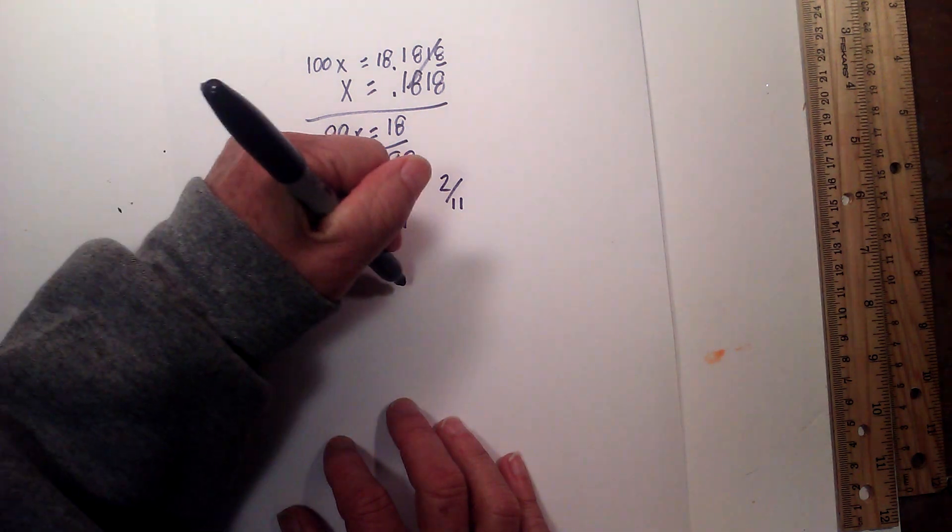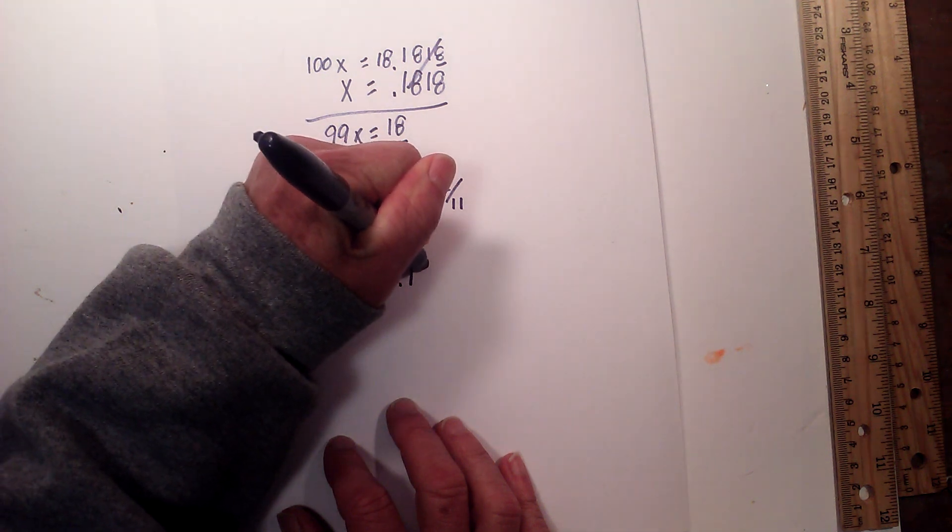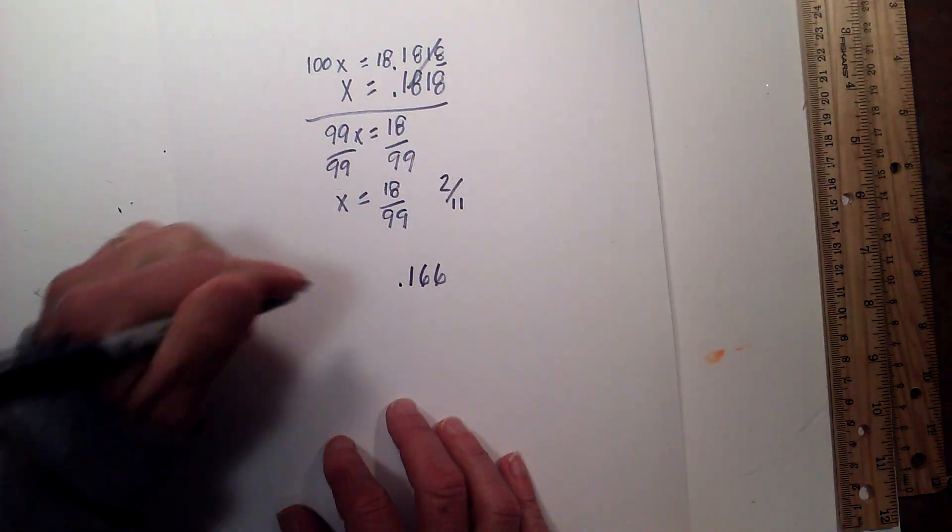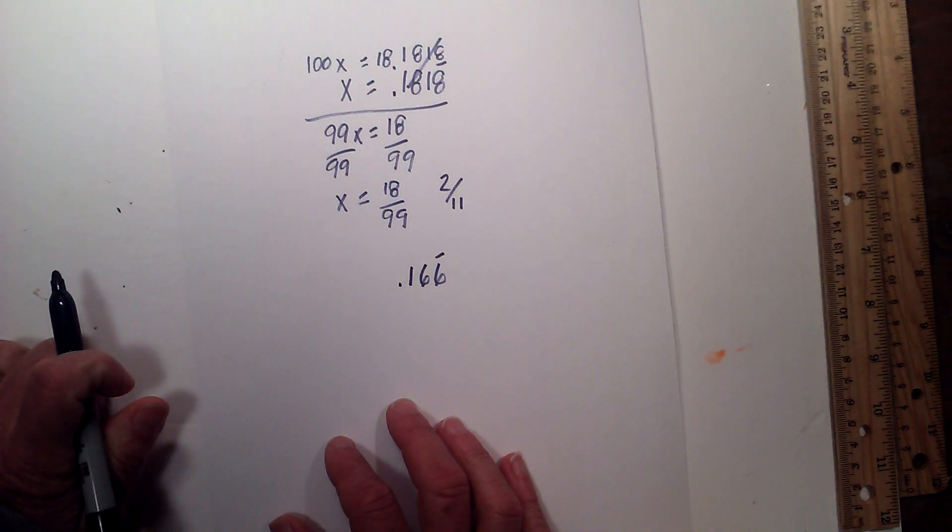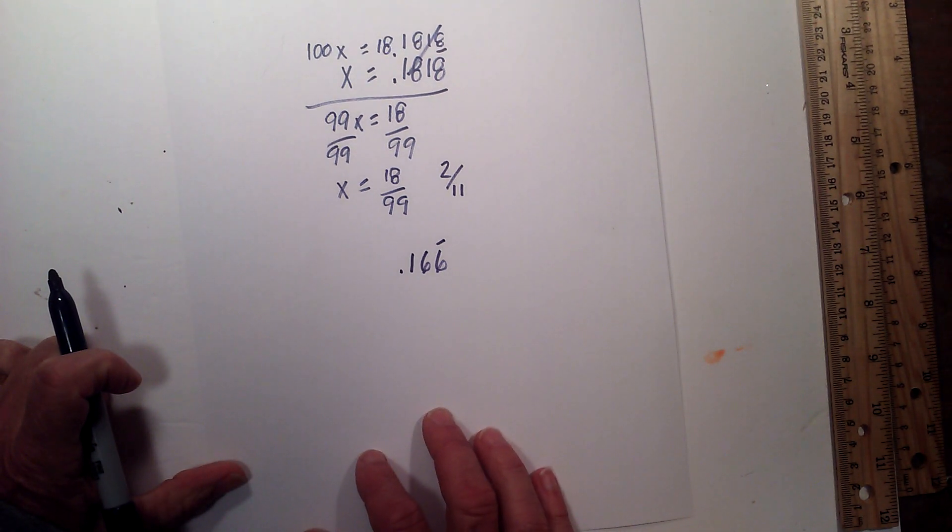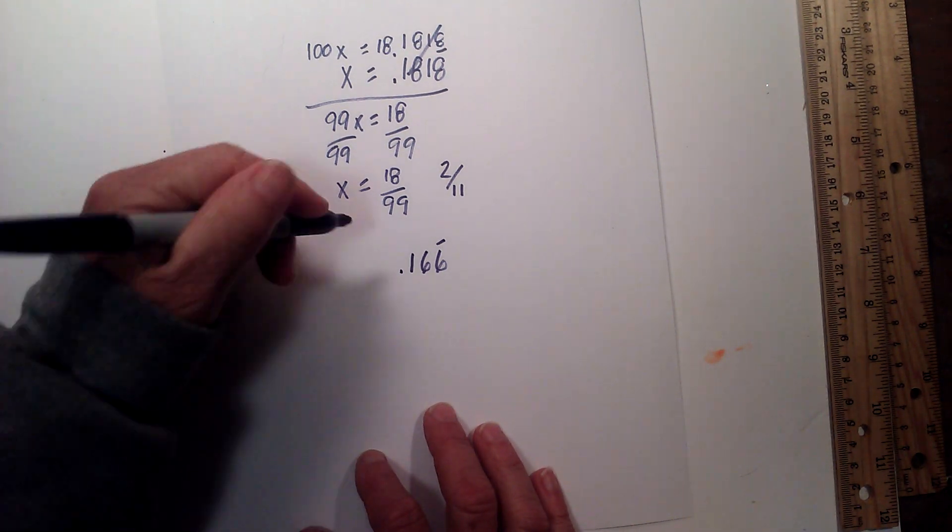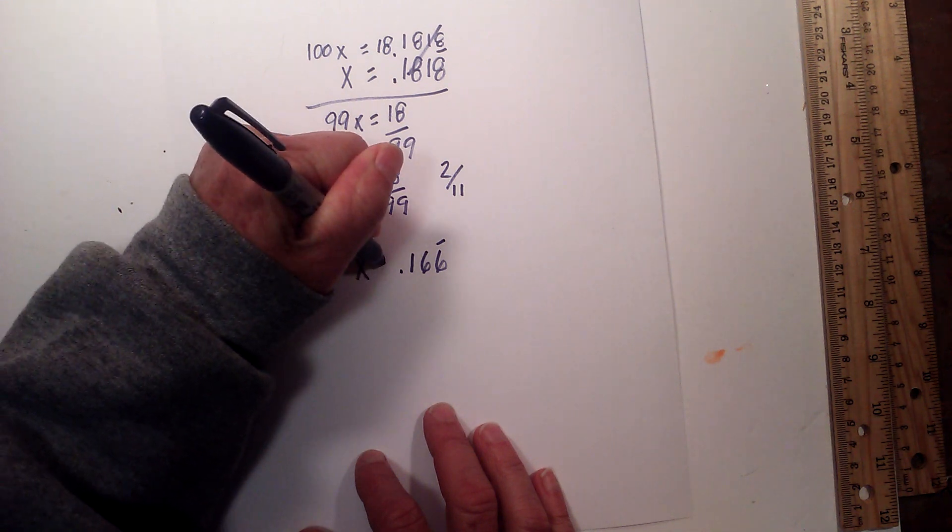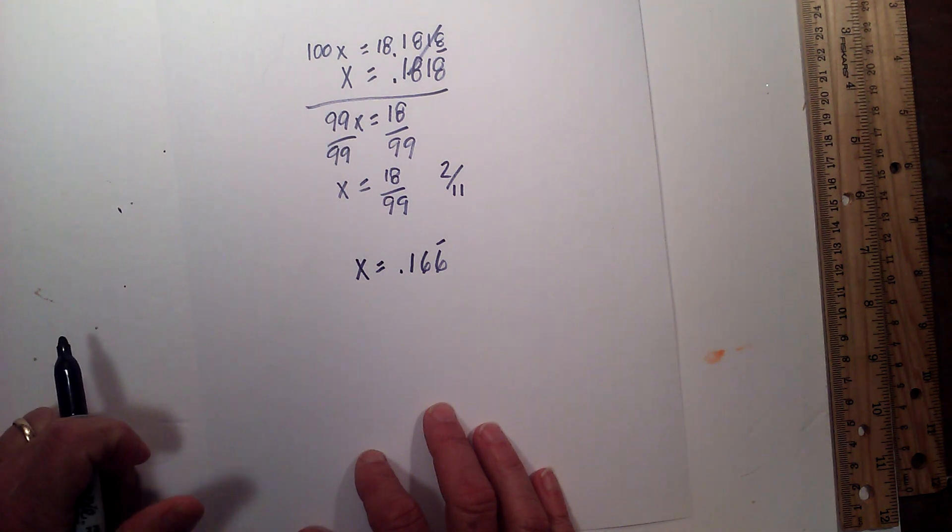What about if we have 0.166 repeating. Okay, what are we going to do with this? Well, we're going to kind of do the same thing. We're going to set it to x. x equals 0.166.